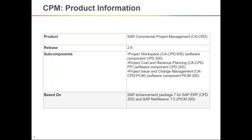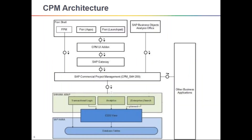I'll explain the most important steps from this admin guide. This is the CPM architecture — how exactly the system gets data from different places and systems. Here you can see the Fiori shell. In S/4HANA, many different apps are available in Fiori to access different transactions in CACPD — Commercial Project Management. In Fiori you can access Floor Plan Manager, Fiori apps, and the Fiori Launchpad.